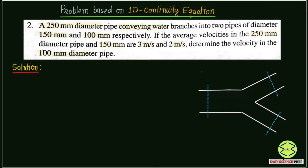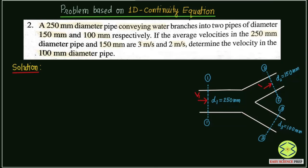This is the main pipe — let me call this section 1-1, where the diameter D1 is 250 mm. These are the branch pipes. The first branch is section 2-2, with diameter D2 equal to 150 mm, and velocity V2. The second branch is section 3-3, with diameter D3 equal to 100 mm and velocity V3. The average velocity in the main pipe is V1, V2 at the first branch, and V3 at the third branch.